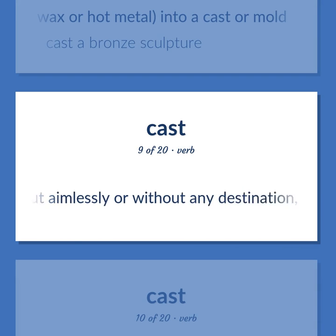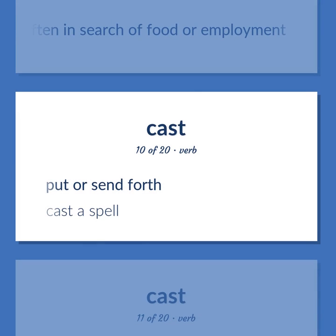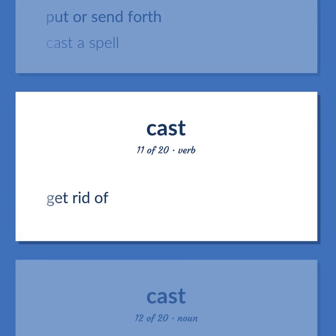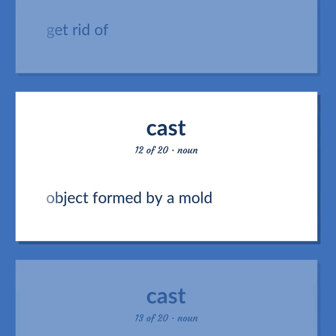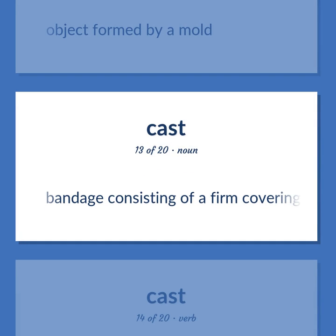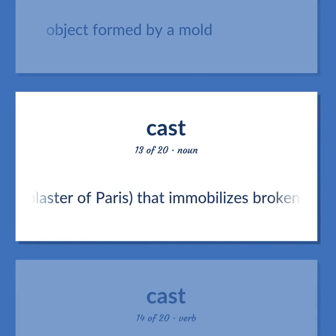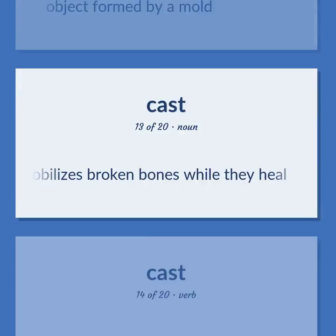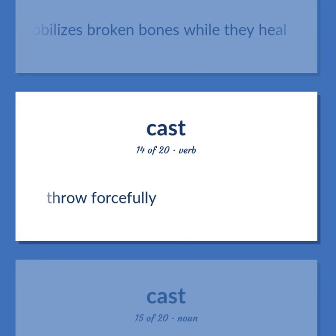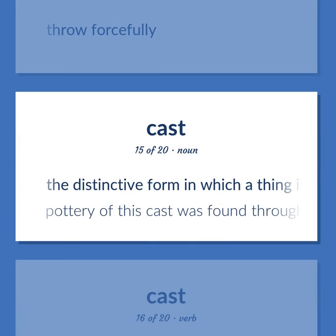Cast: move about aimlessly or without any destination, often in search of food or employment. Put or send forth — cast a spell. Get rid of. Object formed by a mold. Bandage consisting of a firm covering, often made of plaster of Paris, that immobilizes broken bones while they heal. Throw forcefully. The distinctive form in which a thing is made — pottery of this cast was found throughout the region.